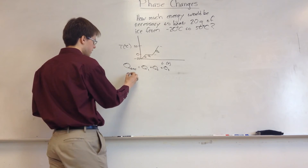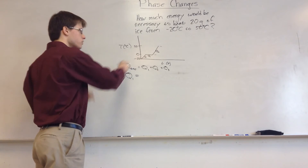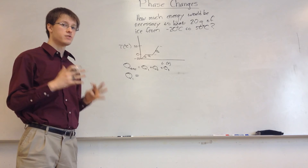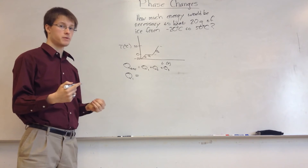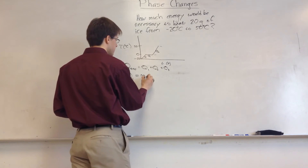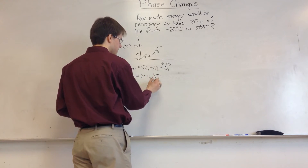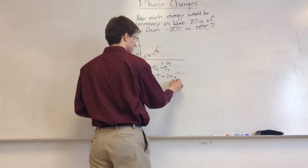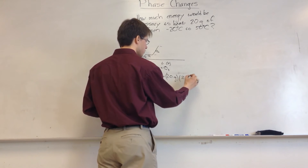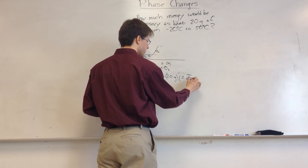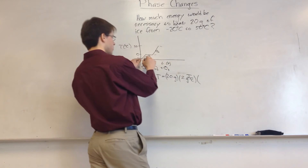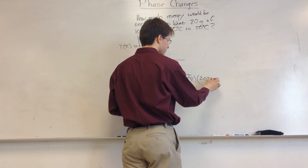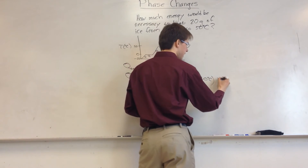Q1 — you're just increasing the temperature of the ice, not melting it, so use MC delta T where C is the heat capacity of ice. We have 20 grams. The heat capacity of ice is 2 joules per gram degree Celsius. The change in temperature for this segment goes from negative 20 to 0, so it's a 20 degree Celsius change. Multiply these and you get 800 joules.